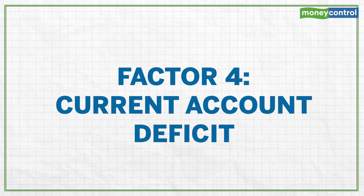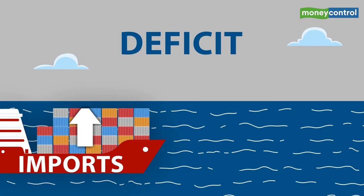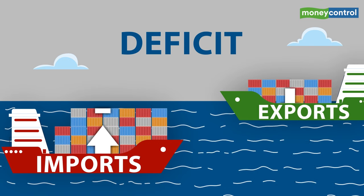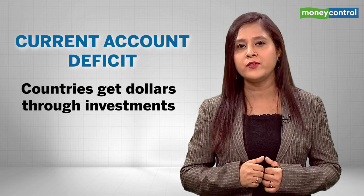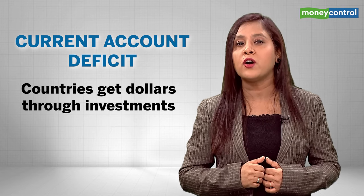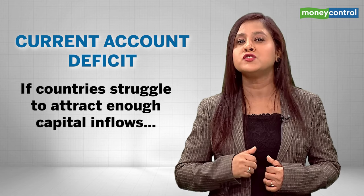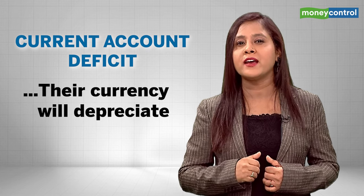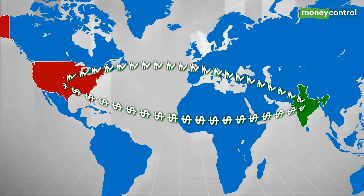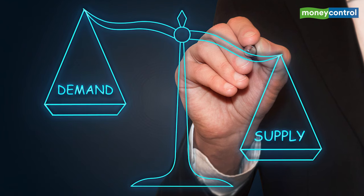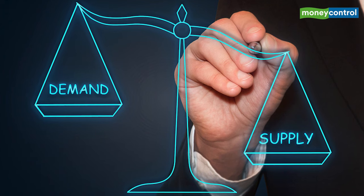Factor number four: the current account deficit. A deficit on the current account means the value of goods and services the country is importing is higher than the value they are exporting. This deficit needs to be plugged through dollars, which come through investments recorded on the capital or financial accounts. However, a country that struggles to attract enough capital inflows to finance this deficit will see its currency depreciate. The country is spending more on foreign goods and services, requiring more foreign currency — more demand for foreign currency and less for domestic means the domestic currency will dip.